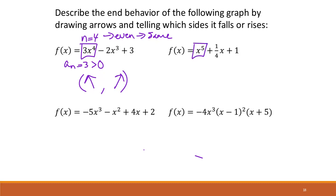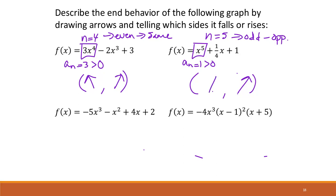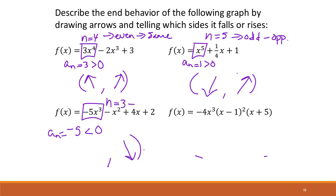For x to the fifth, our aₙ is 1 — even though we don't write it — which is greater than zero, so we're going up on the right. Our n is five, which is odd, so the tails go in opposite directions — meaning we're going down on the left-hand side. For the next one, aₙ is negative five, which is less than zero, so we go down on the right. And n is three, which is odd, so the tails are opposites.